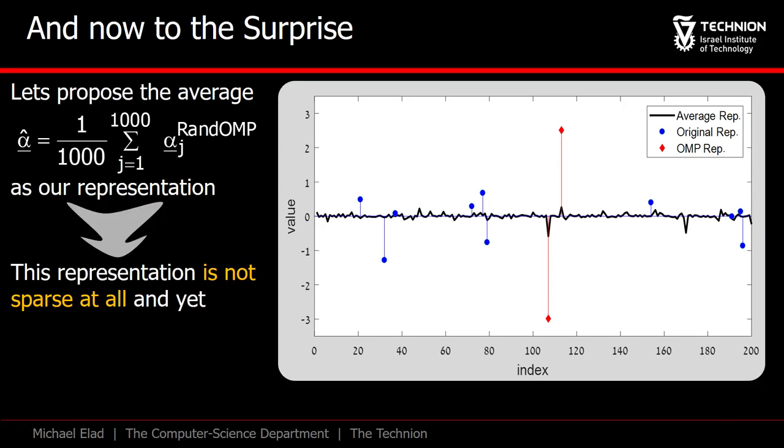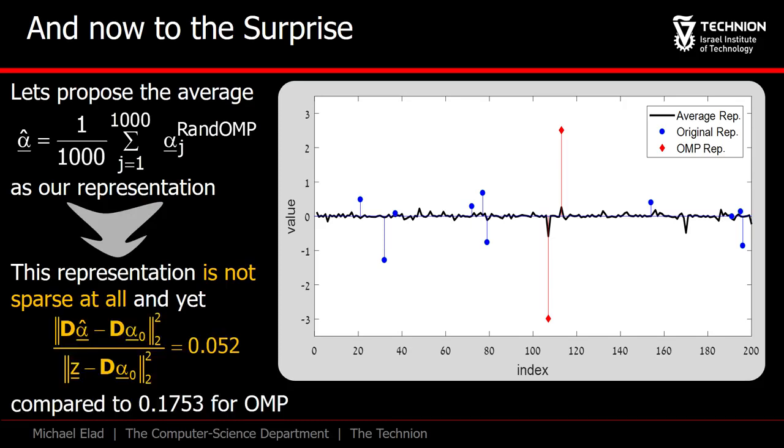In fact, it is dense. All its entries are non-zeros. Nevertheless, when we use it as our denoiser, we get a denoising ratio of 0.052, far better than all the alternative solutions we have seen. What is going on here?